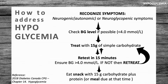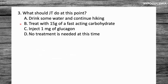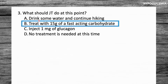Back to the question — what should JT do? The answer is B: treat with 15 grams of a fast-acting carbohydrate. Drinking water would hydrate him but would not help his hypoglycemia. Injecting glucagon could raise blood sugar, but glucagon is reserved for when a person is unconscious or in a severe hypoglycemic attack and unable to self-treat orally. No treatment is needed is incorrect — his levels are 3.6 millimoles per liter and if nothing is done, it will progress and get worse.